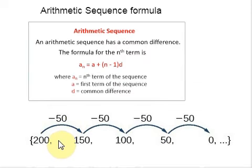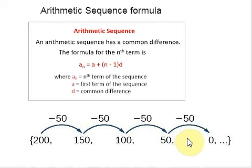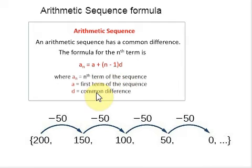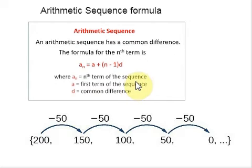You can also find the y-intercept by graphing the function and determining where the line that connects the points would intersect the vertical axis. That is one way of finding the y-intercept. Or you can simply subtract the common difference from the first term of the sequence. Hope you got this concept. So this is the explicit formula for the nth term of an arithmetic sequence: An equals A1 plus (N minus 1) times D.